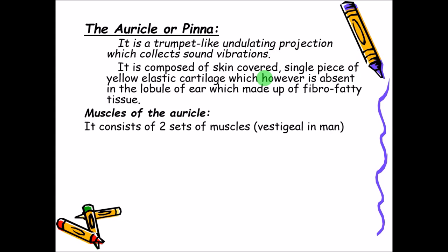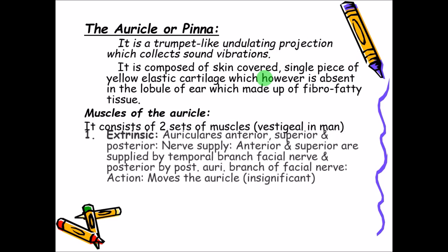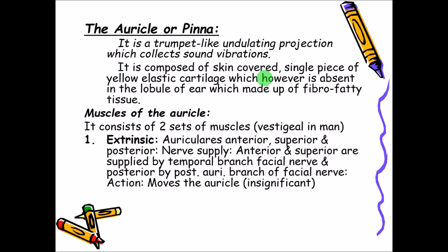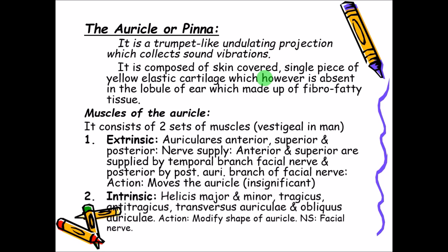In lower animals you can observe they can twist and turn their auricle because of these muscles. In human beings they are vestigial. The muscles are divided into two types: extrinsic and intrinsic. Extrinsic muscles are outside the auricle itself but twist and turn it. The extrinsic muscles are auricularis anterior, superior, and posterior.